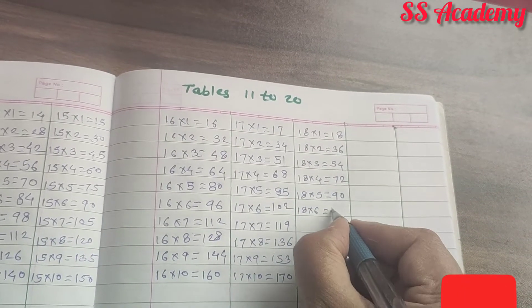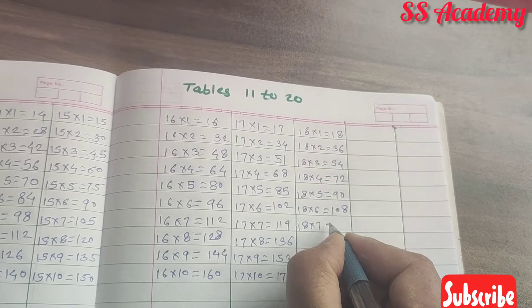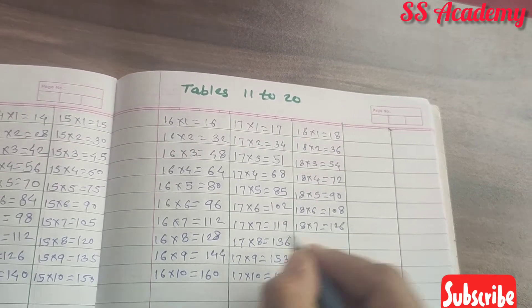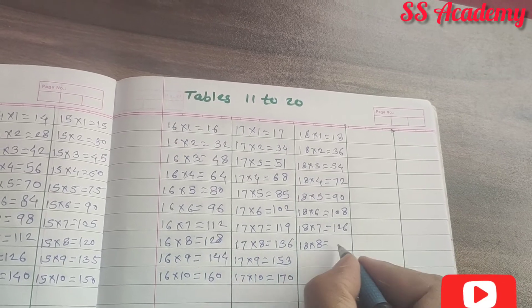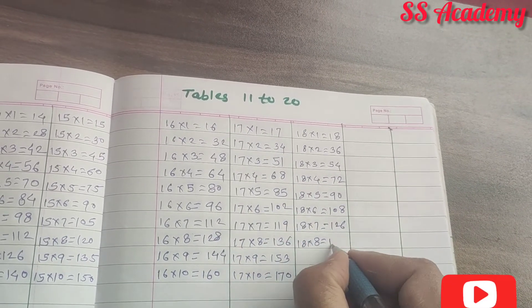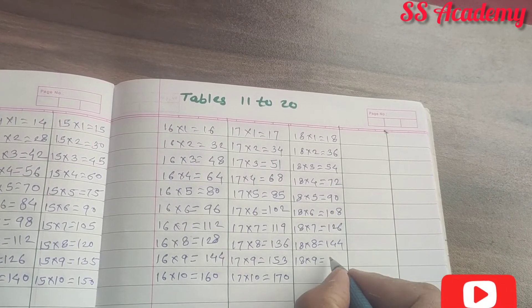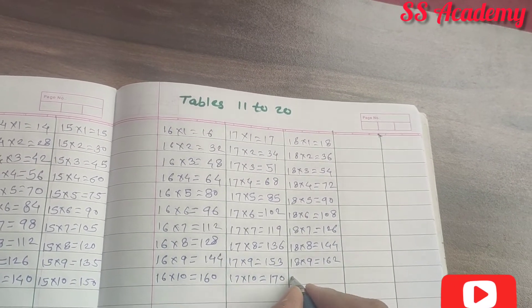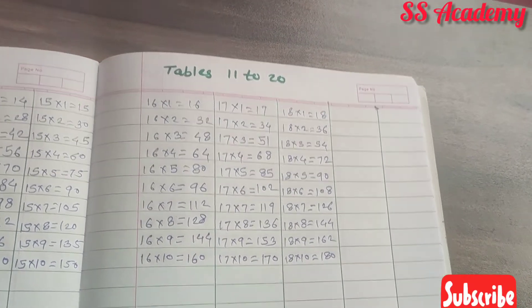18 times 6 is 108. 18 times 7 is 126. 18 times 8 is 144. 18 times 9 is 162. 18 times 10 is 180.